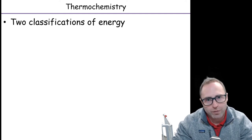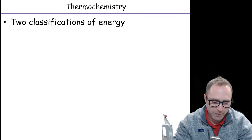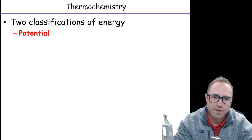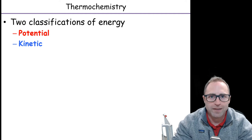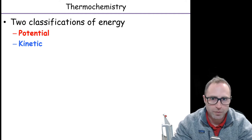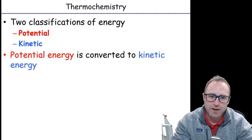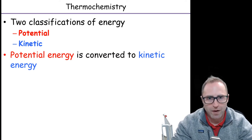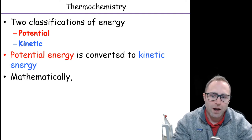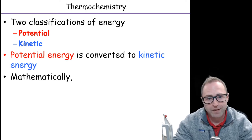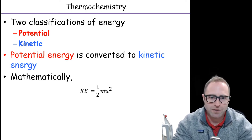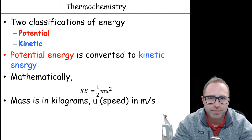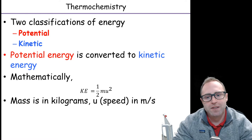If we're going to talk about thermochemistry, there are a couple of classifications of energy we need to discuss. If you had a high school physics class, this is probably going to sound pretty familiar. The first one is potential energy and the second one is kinetic energy. These two operate in tandem with one another — potential energy gets converted into kinetic energy, and kinetic energy gets converted back into potential energy. We can define kinetic energy mathematically: kinetic energy equals one half mass times speed squared, where mass is in kilograms and speed is in meters per second.